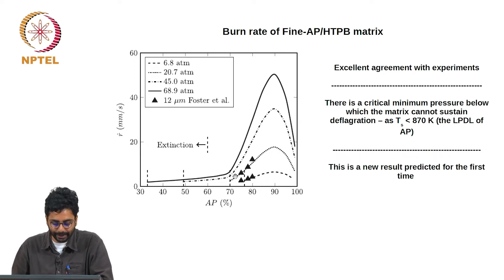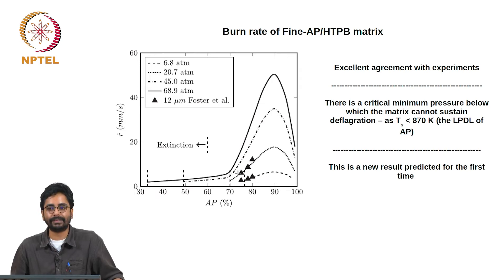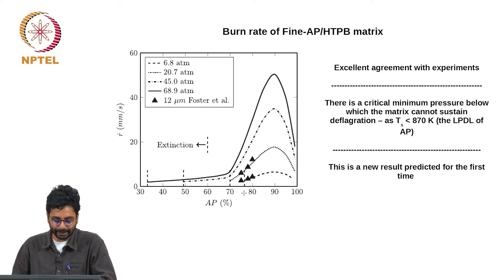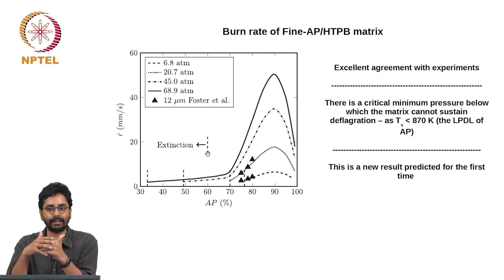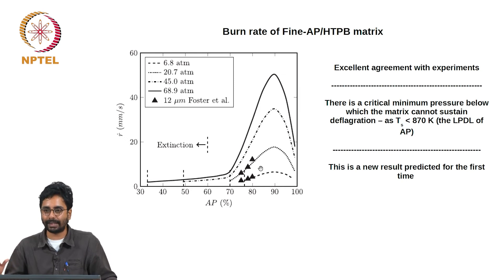While this has been recognized by experimentalists when making propellants, it was not formally theoretically proved. Even now it is not proved, but there seems to be a lot of evidence to indicate it is correct. This is what we call extinction — the basic idea is that under certain conditions when the surface temperature becomes lower than the melting temperature of AP the propellant will not burn. That simple idea manifests itself in this fashion for homogeneous propellants, and in a slightly more complicated way for actual propellants.